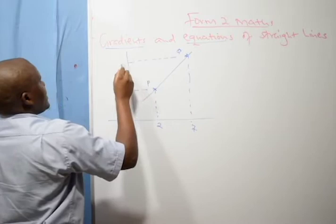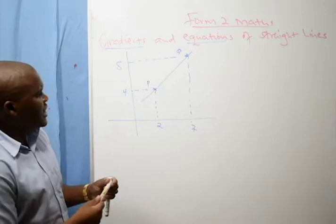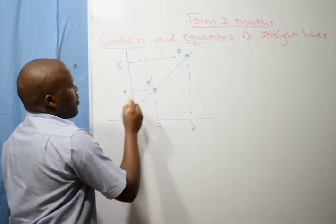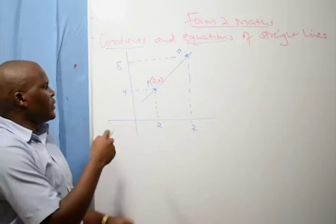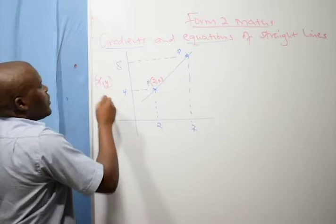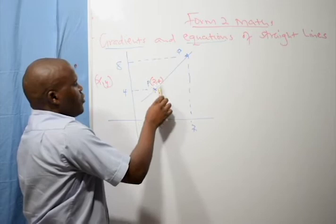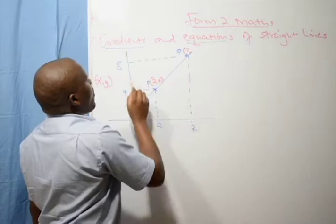Remember from Form 1, we read coordinates as X, Y. So our point P here is X, Y — that is two, four. Most students usually do it the other way around as Y, X, but it is X, Y. We start with X, that is two, then Y. So point P is (2, 4). Point Q here: X is seven, Y is eight, so Q is (7, 8).